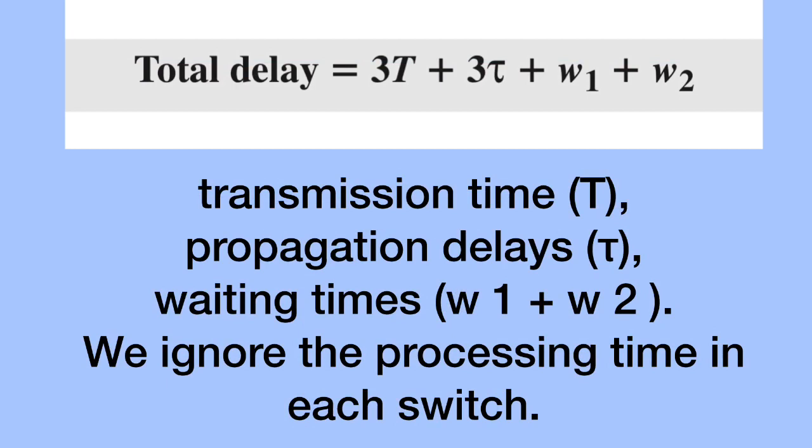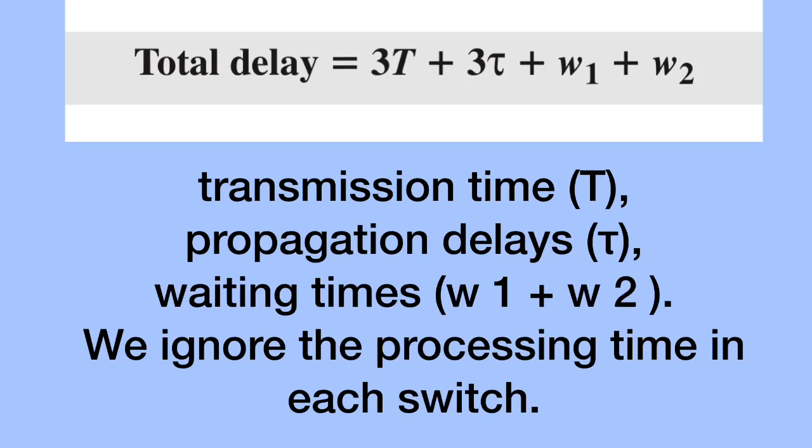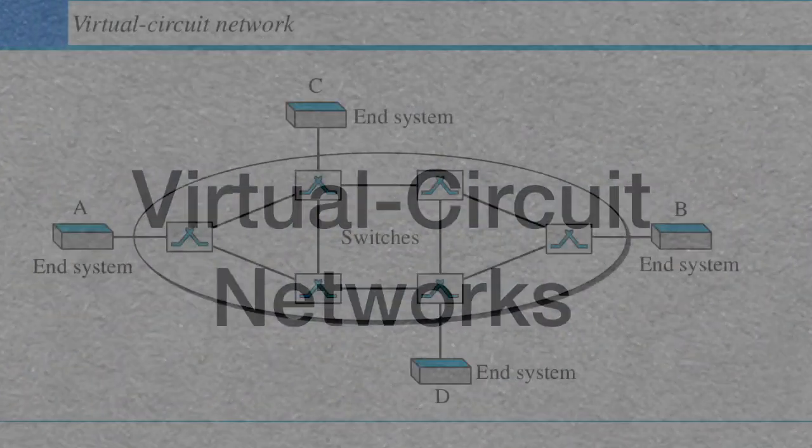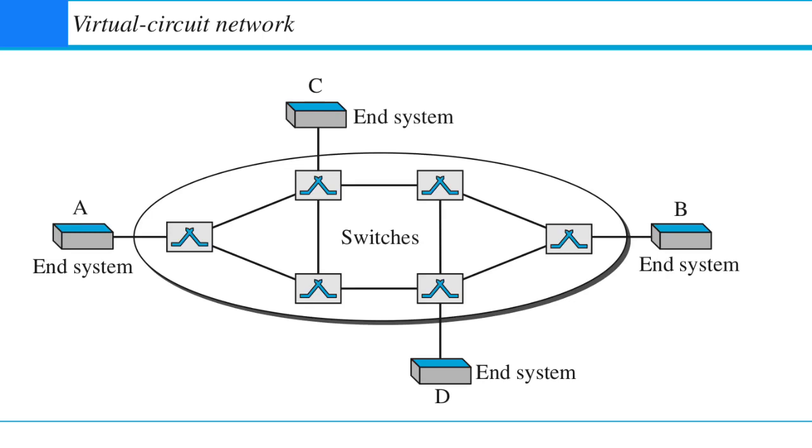This is how we calculate the total delay: 3T plus 3 tau plus W1 plus W2. Transmission time, propagation delay, plus waiting time will be added. Virtual circuit network is a combination of datagrams network and circuit switched network.